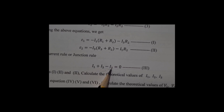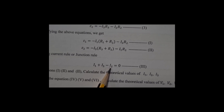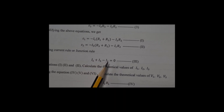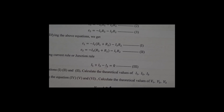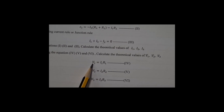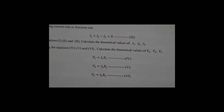By solving these two equations, we get the value of I1 and I3. Substituting I1 and I3 back into the junction equation gives I2. Now knowing I1, I2, I3 and R1, R2, R3, we can calculate V1 = I1·R1, V2 = I2·R2, and V3 = I3·R3.